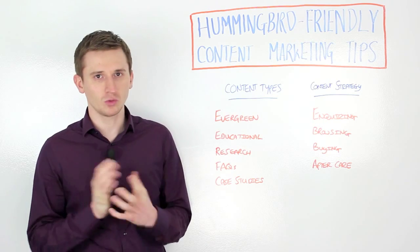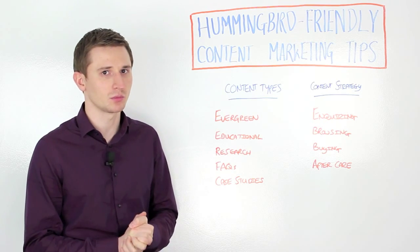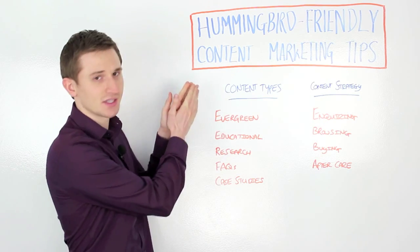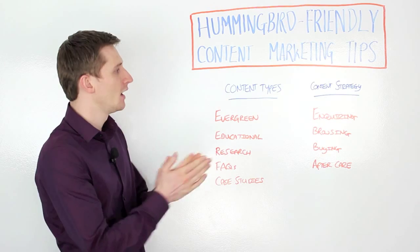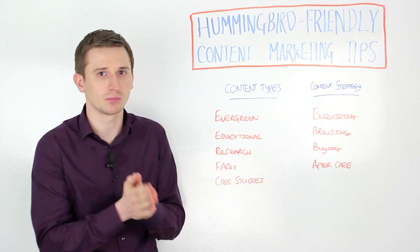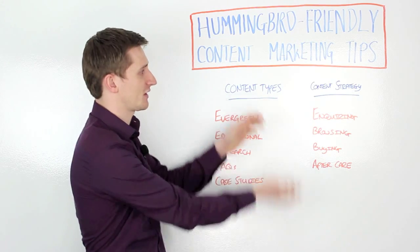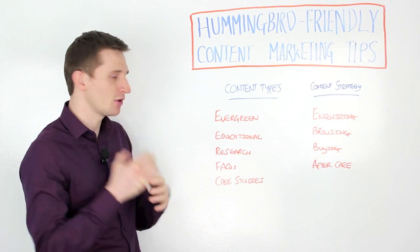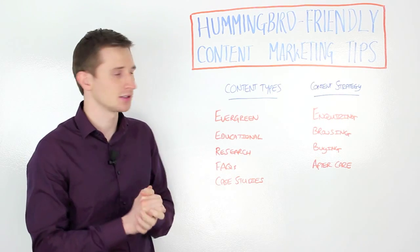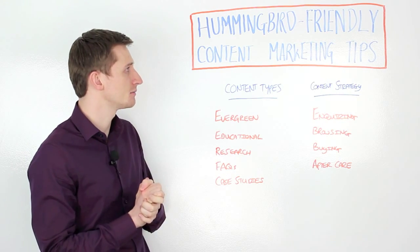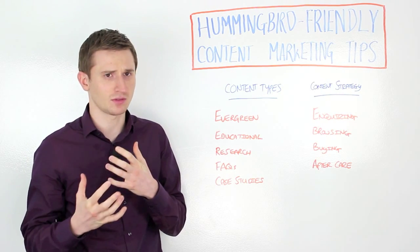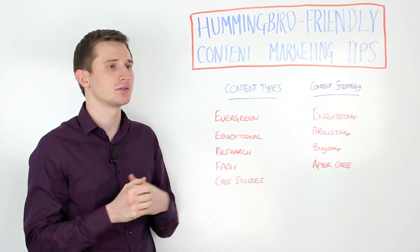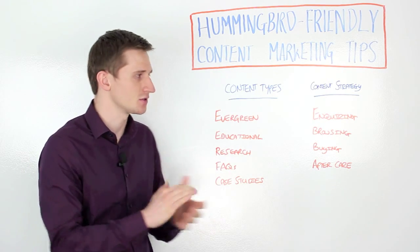There are two ways that we're going to do this today. We're going to look at a variety of different content types, and then we're going to formulate a bit of a content strategy. In both instances, they're both going to be looking at Hummingbird and this idea about context and user intent.